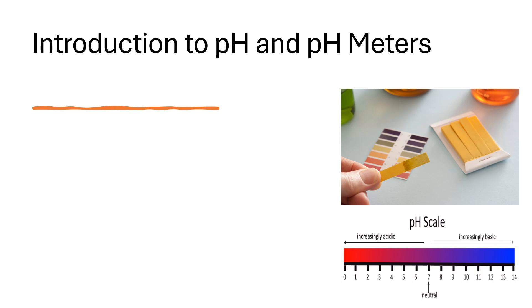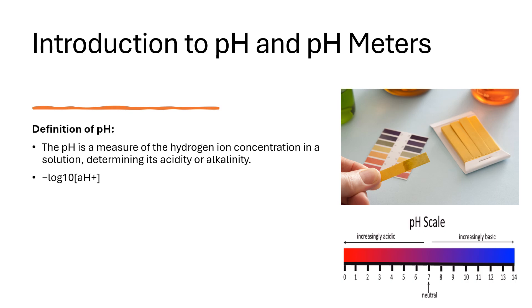Let's start with the basics, that is the definition of pH. The pH of a solution measures the concentration of hydrogen ions within the solution. This concentration determines whether a solution is acidic or alkaline. It is also defined as the negative log of hydrogen ion concentration.